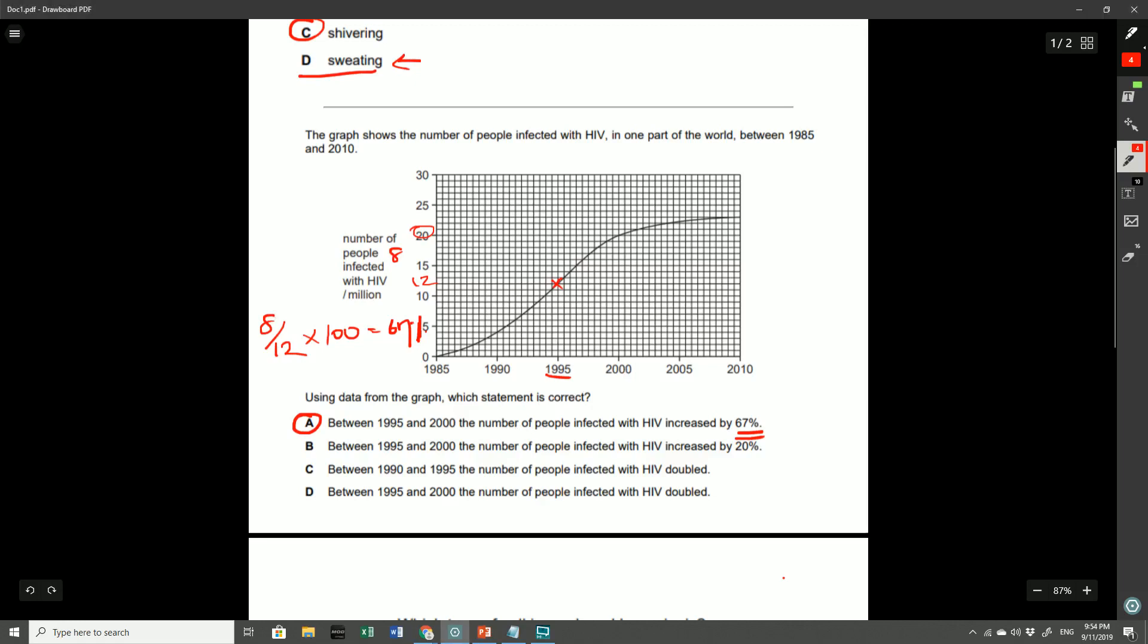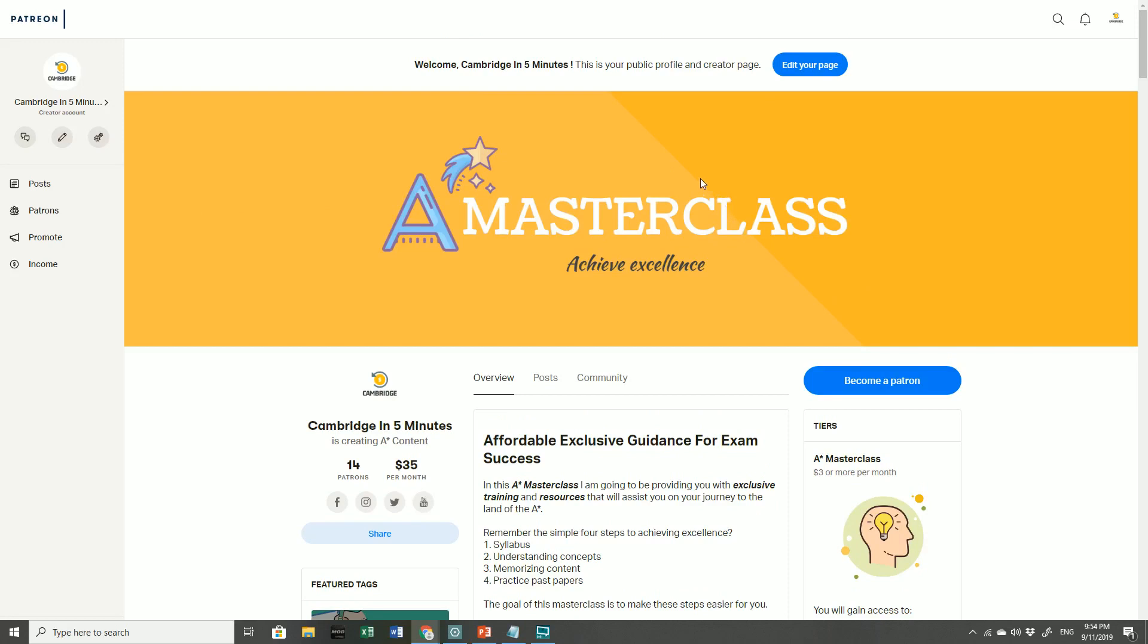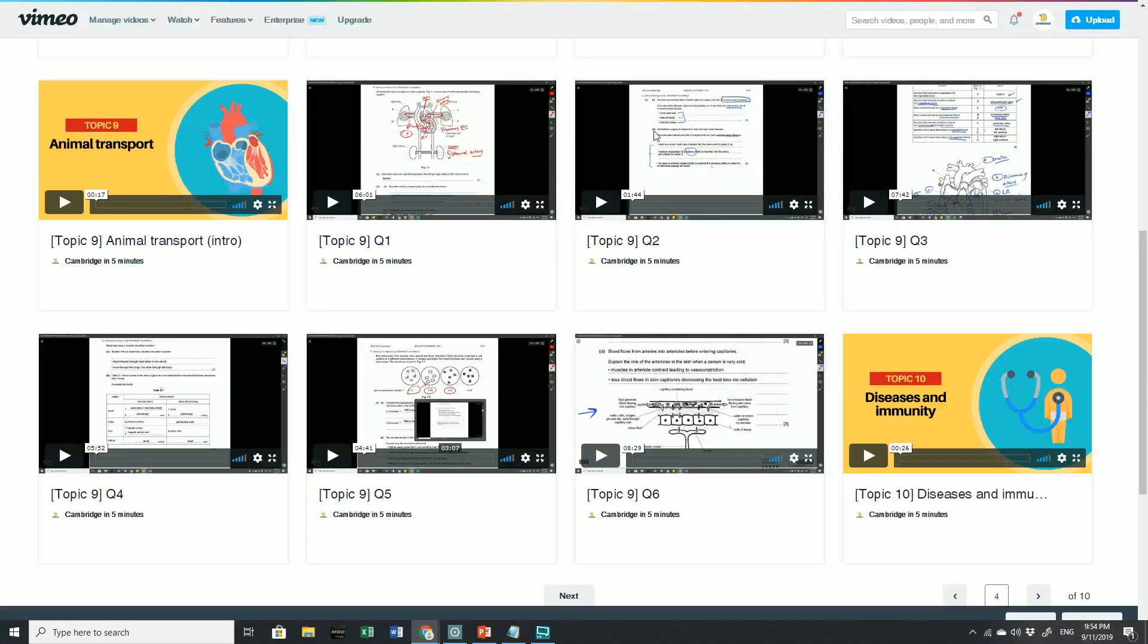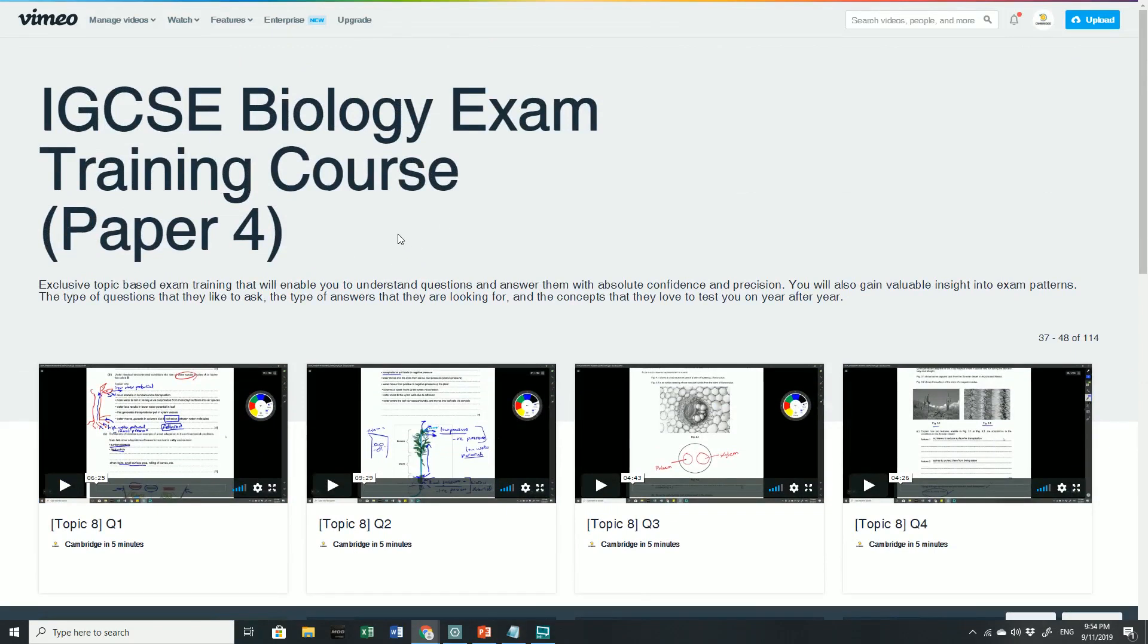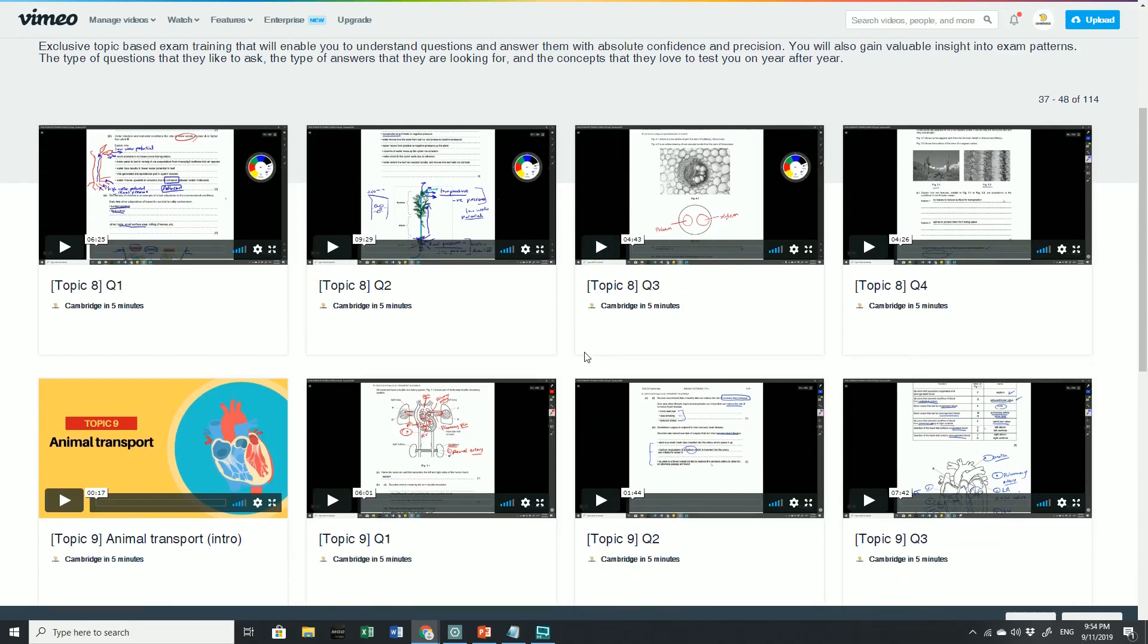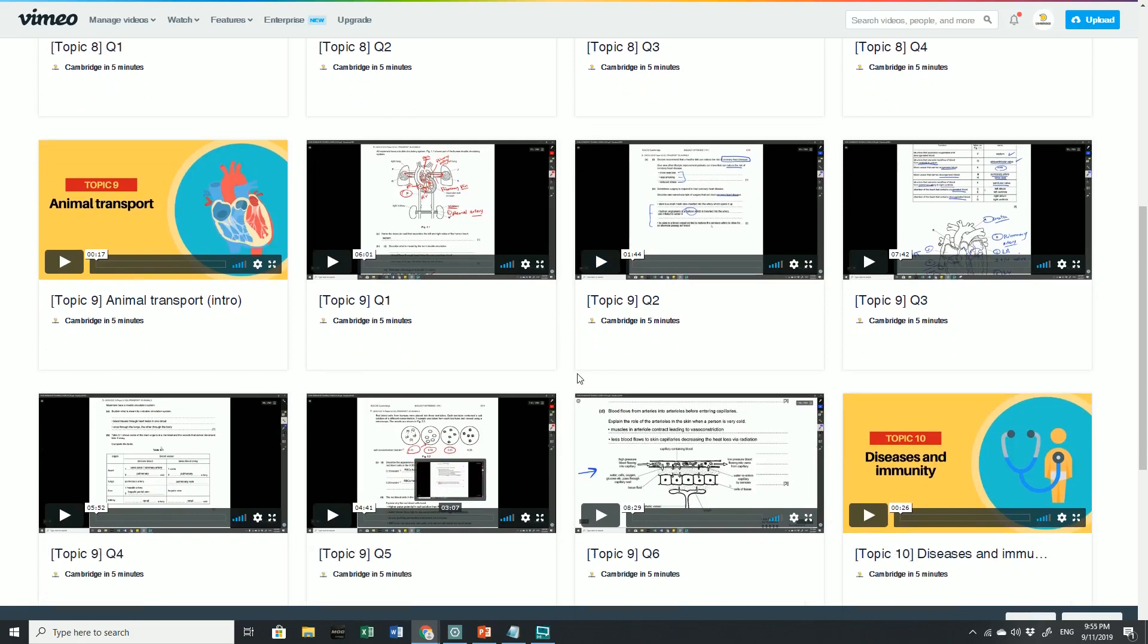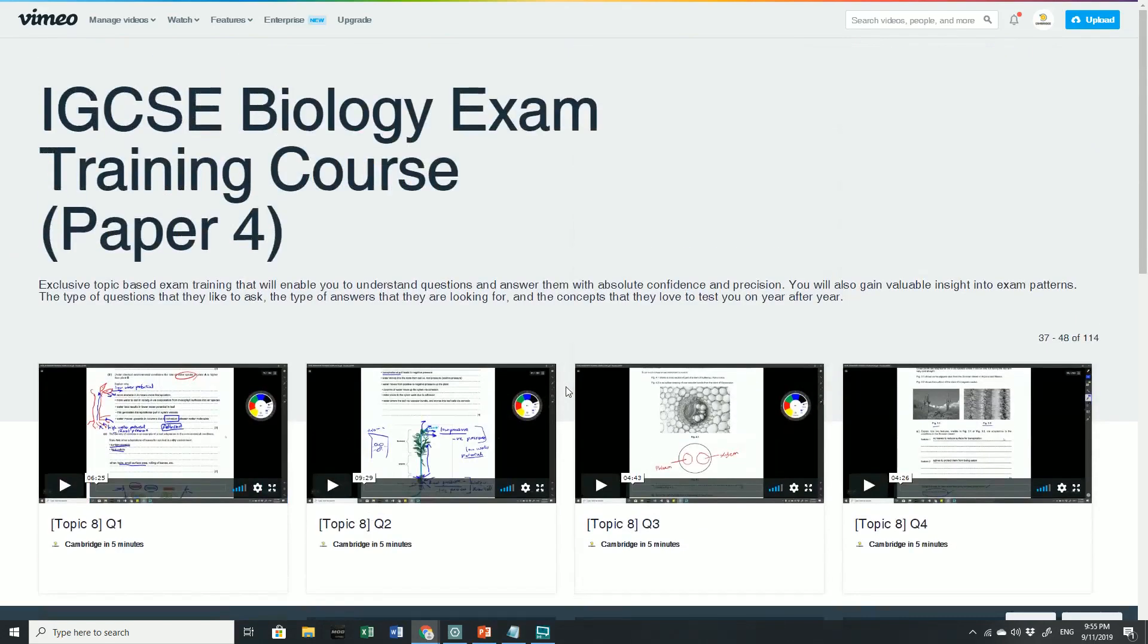Now, before I move on to this fourth question, I just want to quickly take a look at my A star masterclass channel. I've recently added a lot of different things to this channel, and I think some of which you will find very helpful. For example, I've got this IGCSE Biology exam training course for paper four, where I basically just go through some common types of questions that they've asked on a topic by topic basis. This allows you to understand what sort of questions you might get asked in your particular examinations for each particular topic in the course, and how to answer them as well. I've got over 100 exclusive videos on here that you can take a look at. So make sure you go and check that out if you are interested.